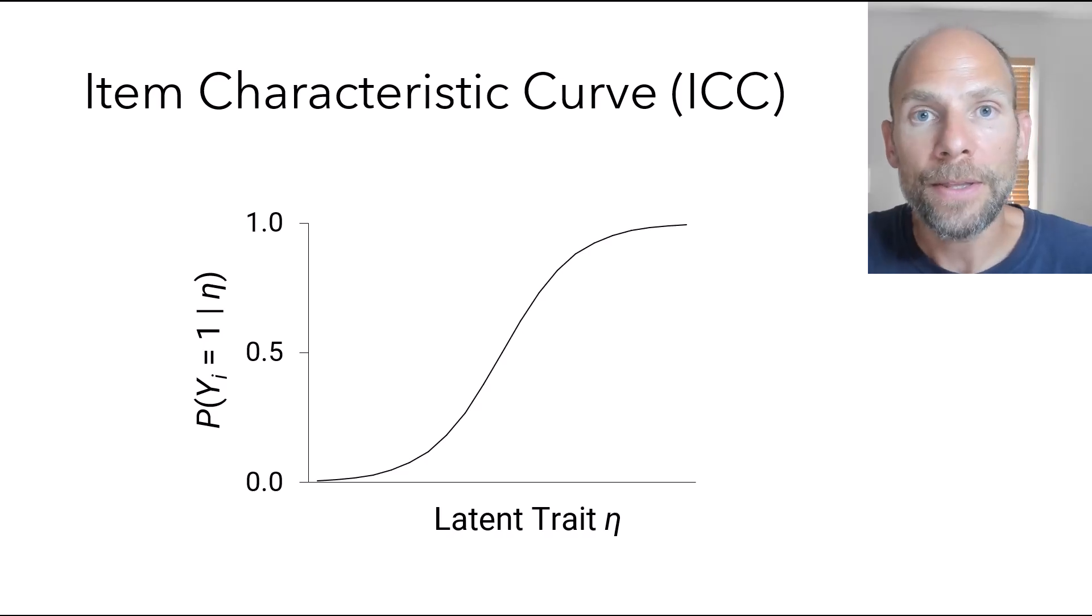And so here you can see on the x-axis, you have a continuous latent trait variable. So that could be, for example, spatial ability or intelligence. And on the y-axis, you have the item response probability between 0 and 1 for a binary item. So somebody has a probability between 0 and 1 of correctly scoring on a specific item of, for example, spatial abilities. And so this S-shaped curve describes the relationship between ability and item solution probability or item response probability more generally.